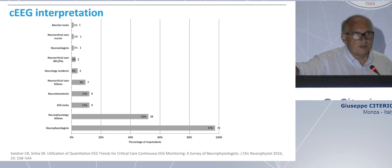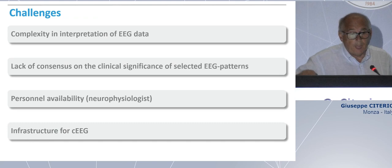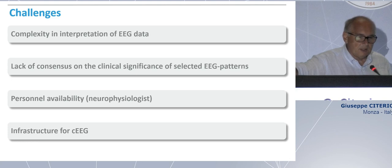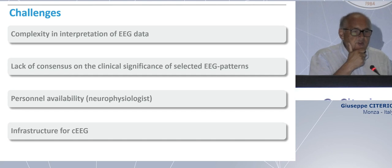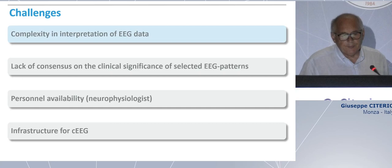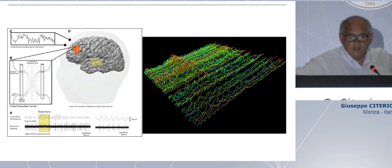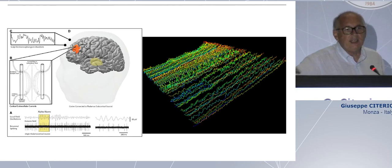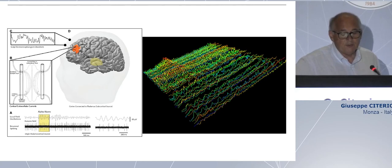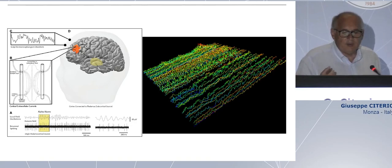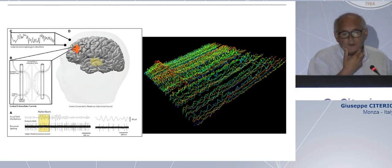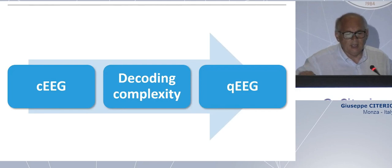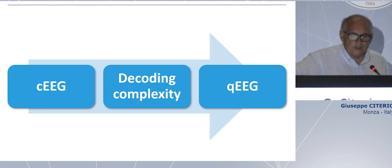The first challenge is that we are not able to interpret the complexity of EEG. The difference in potential between two electrodes is a signal continuously going ahead and you need to take a look at it. Recording lasts ten hours — sometimes we record a patient for one day. So you need to have someone looking at the recording. When the neurophysiologist returns to our unit to look at one day of EEG, it takes at least half an hour, even more. So we decided to start in our unit the continuous EEG using the QEEG — the quantitative EEG — because we want to decode the complexity.